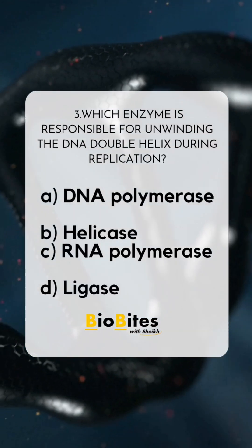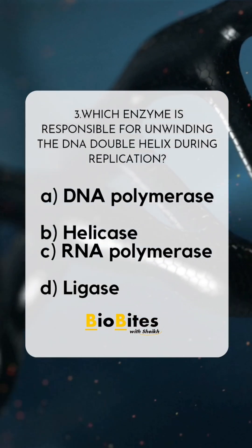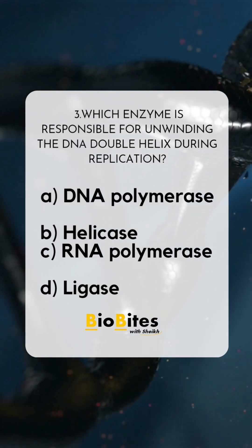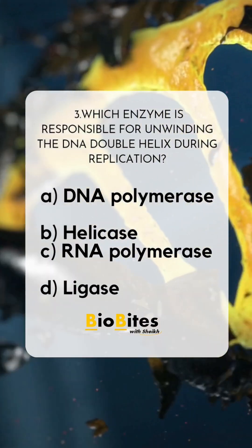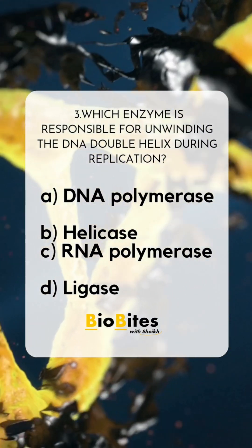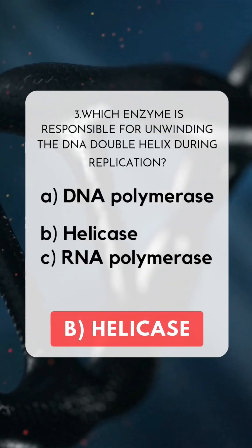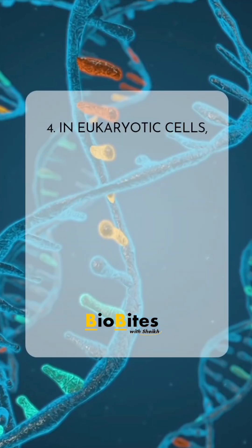Which enzyme is responsible for unwinding the DNA double helix during replication? A. DNA polymerase. B. Helicase. C. RNA polymerase. D. Ligase. Correct answer: B. Helicase.